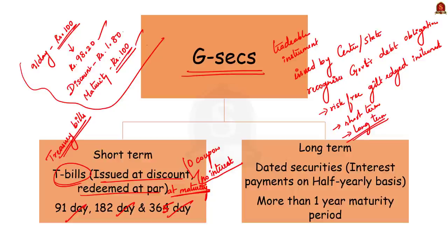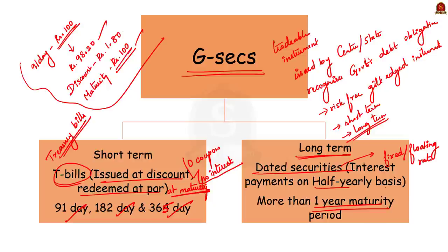Coming to long-term government securities, they are called dated securities. A government paper with tenure beyond one year is known as a dated security. These securities carry either a fixed interest rate or floating interest rate, paid on the face value on a half-yearly basis. Generally, the tenure of dated securities ranges from 5 years to 40 years.